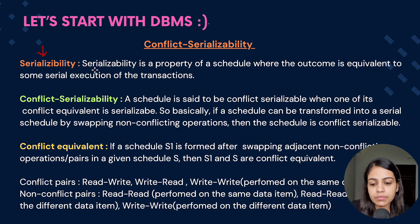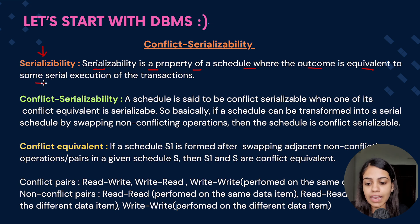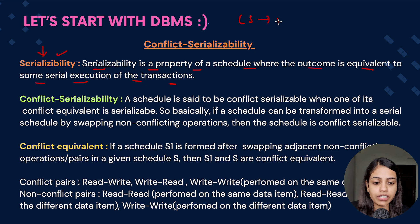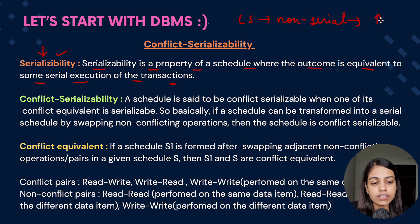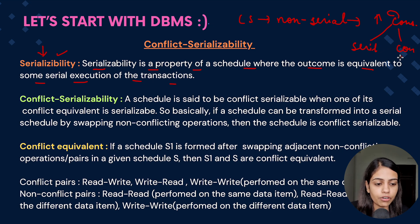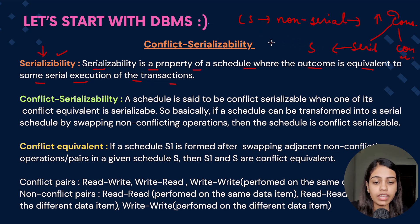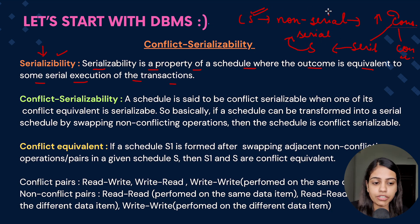Before starting, let's revise some older concepts. Serializability is a property of a schedule where the outcome is equivalent to some serial execution of transactions. In a concurrent schedule there was a non-serial execution of transactions, because of which there were some consistency issues in our database. To encounter this consistency issue we had serializability as well as some concurrency control mechanisms.